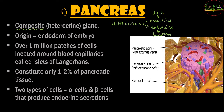The exocrine secretions are the enzymes — the digestive juices that come from the pancreas come from the exocrine system. The endocrine part of the pancreas supplies the hormones that we are going to study. In our study about the endocrine gland, we will only look at the endocrine function of the pancreas; the exocrine function was already covered in the chapter on the digestive system.